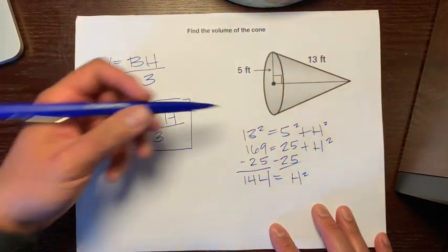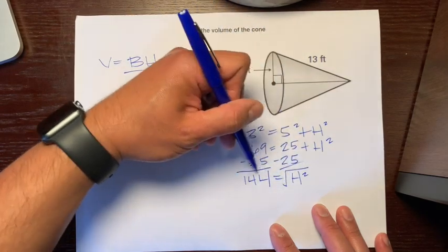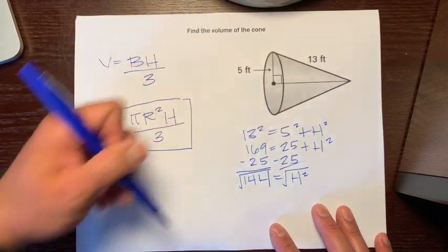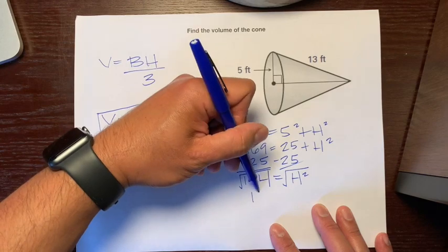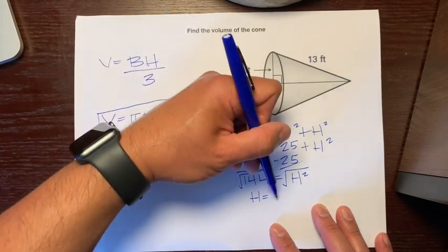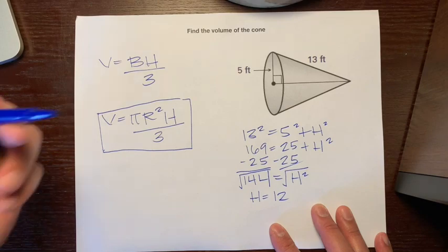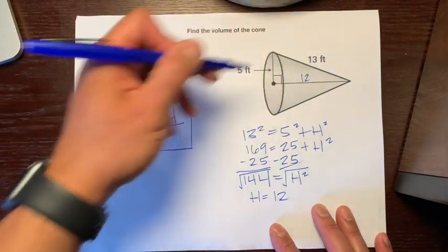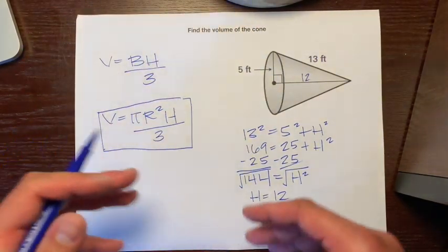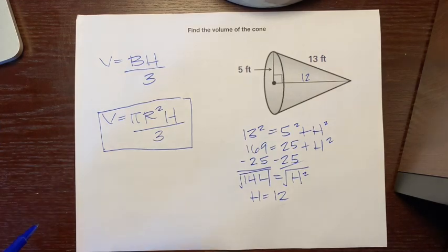The opposite of squaring something is square rooting. So let's find the radical of 144. Some of you have memorized that. Square root of 144 is 12. So now we have the height. We have all of the measurements we need. And so let's just plug all this in into our formula.